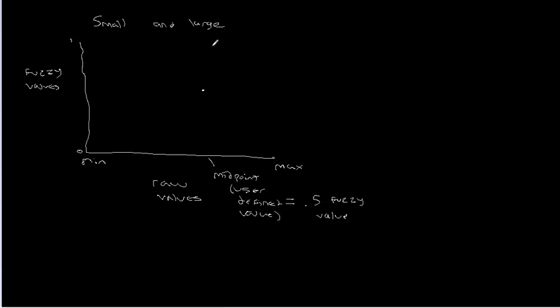And what will happen is, in the case of small first. What this is going to do, in the case of small, is as we decrease our data values, as we go away from our midpoint decreasing our data value, we increase the fuzzy value. And as we go away from the midpoint increasing data value, we decrease our fuzzy value. So by doing this, we have this sort of S-shaped curve.